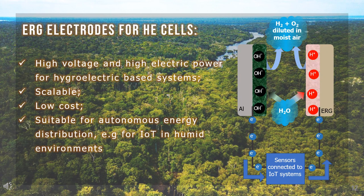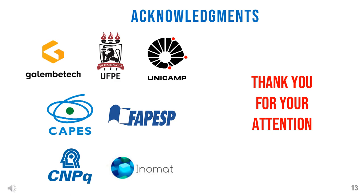In conclusion, exfoliated and reassembled graphite makes suitable electrodes for hydroelectric cells, allowing their scaling and achieving unprecedented power and voltage outputs. Materials cost is low, allowing us to foresee the practical use of hydroelectricity, delivering power to IoT and other devices in remote environments. We thank the Brazilian funding agencies CAPES, CNPq, and FAPESP, and all co-authors.